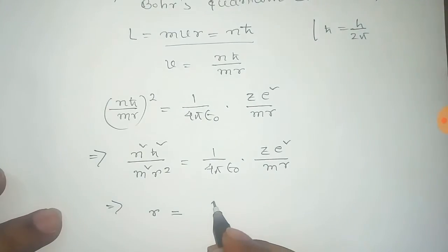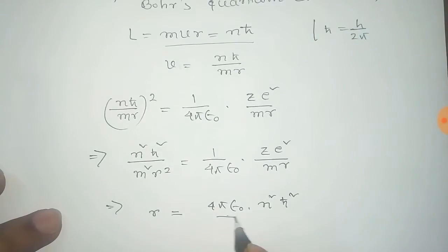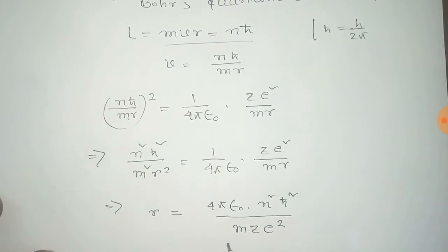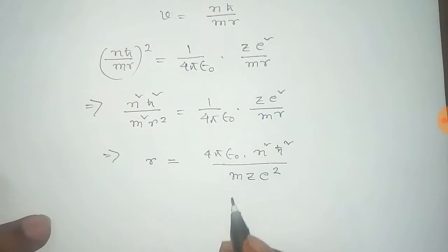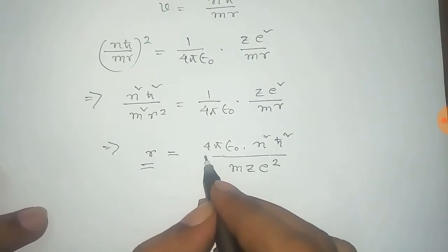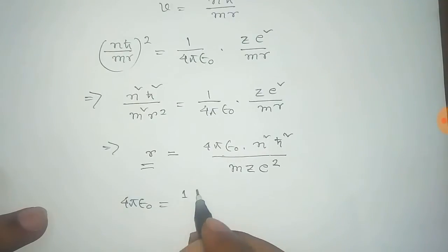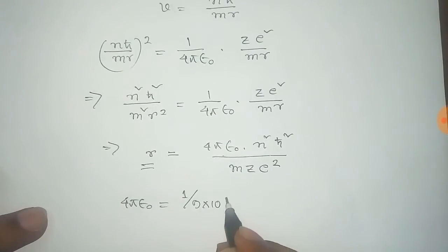From that we get the value of radius R equals 4πε₀N²ℏ²/(MZE²). In SI units, 1/(4πε₀) equals 9×10⁹.